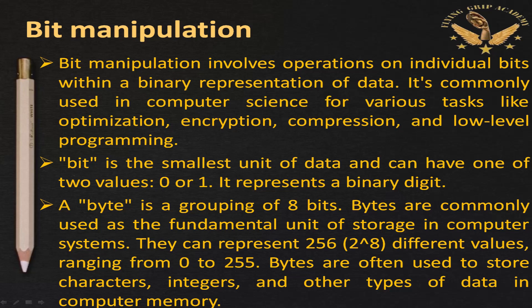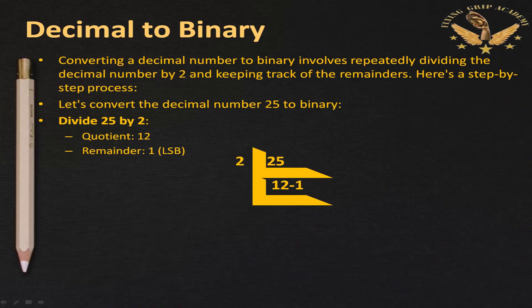A bit is the smallest unit of data and can have one of two values: either zero or one. A byte is a group of eight bits. Bytes are commonly used as the fundamental unit of storage in computer systems and can represent 256 different values ranging from 0 to 255. Bytes are often used to store characters, integers, and other types of data in computer memory.